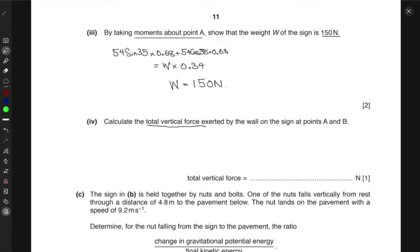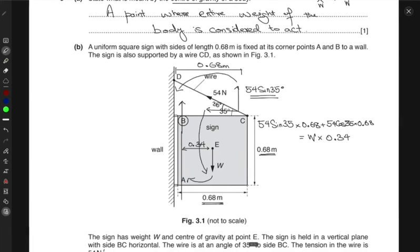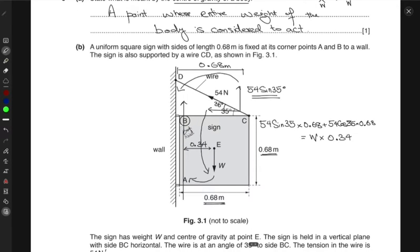Now calculate the total force exerted by the wall on the sign at point A and point B. So at point A and point B we want the vertical force that is exerted. If you look at this figure again, the vertical force at point A and B is...